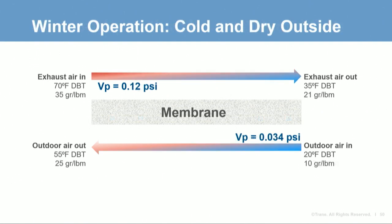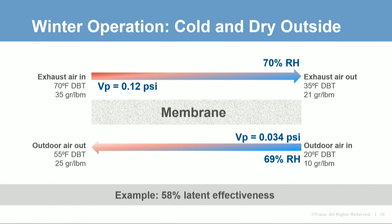During heating, the water vapor pressure is higher on the exhaust airstream, so water vapor is recovered from the exhaust air to the outdoor air. The more saturated the membrane is with water vapor, the higher the transfer rate through the membrane. The relative humidity of the exhaust and outdoor airstreams is higher in winter, resulting in a more saturated membrane and higher transfer rate. For this example membrane, the latent effectiveness increases to 58% in winter.